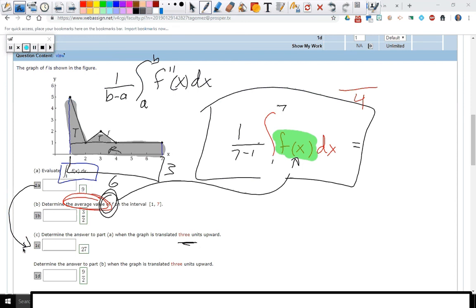And then the last one. Determine the answer when the graph is translated. Wait, what? Oh, from part B. So from part B, if I translated it up, what would it be? Questions? All right.